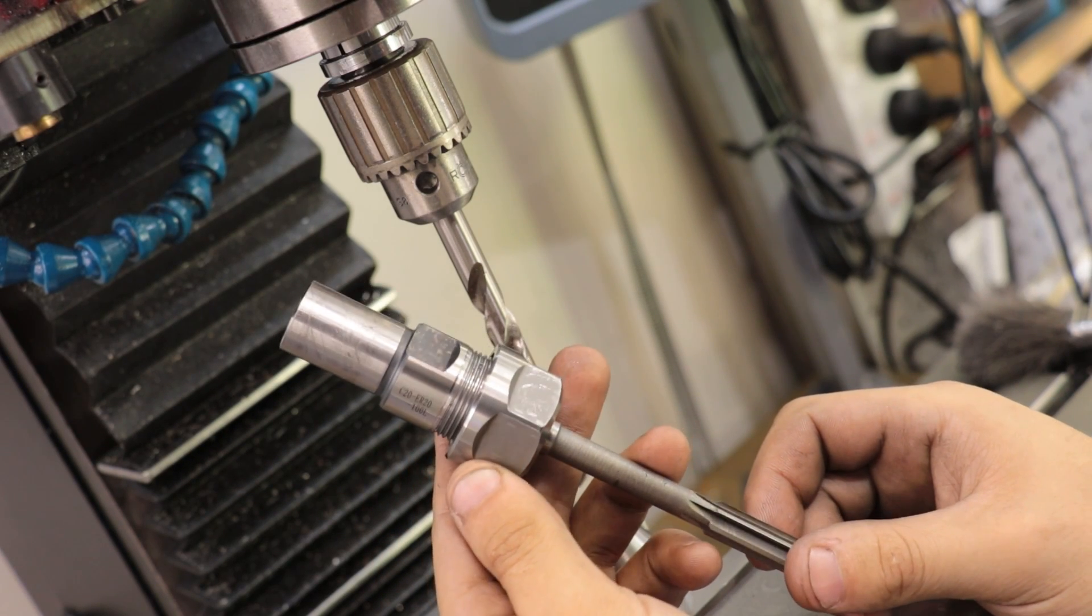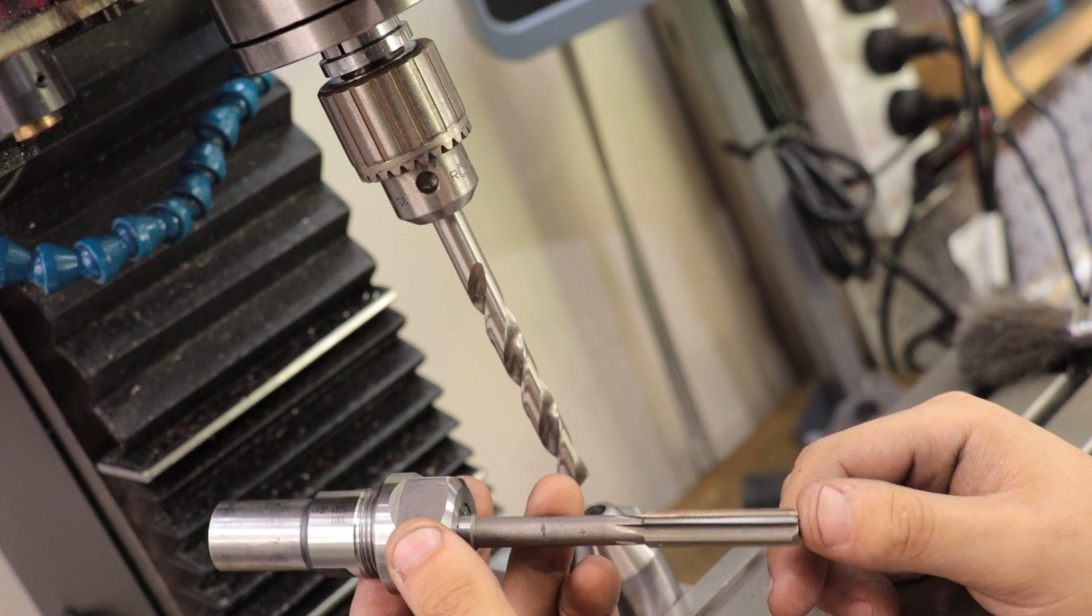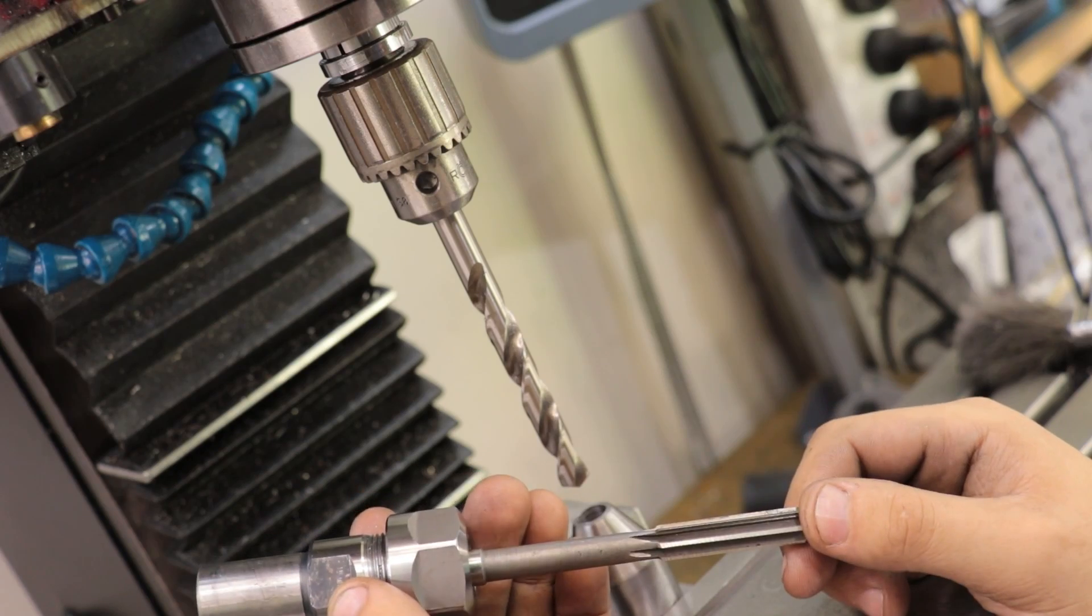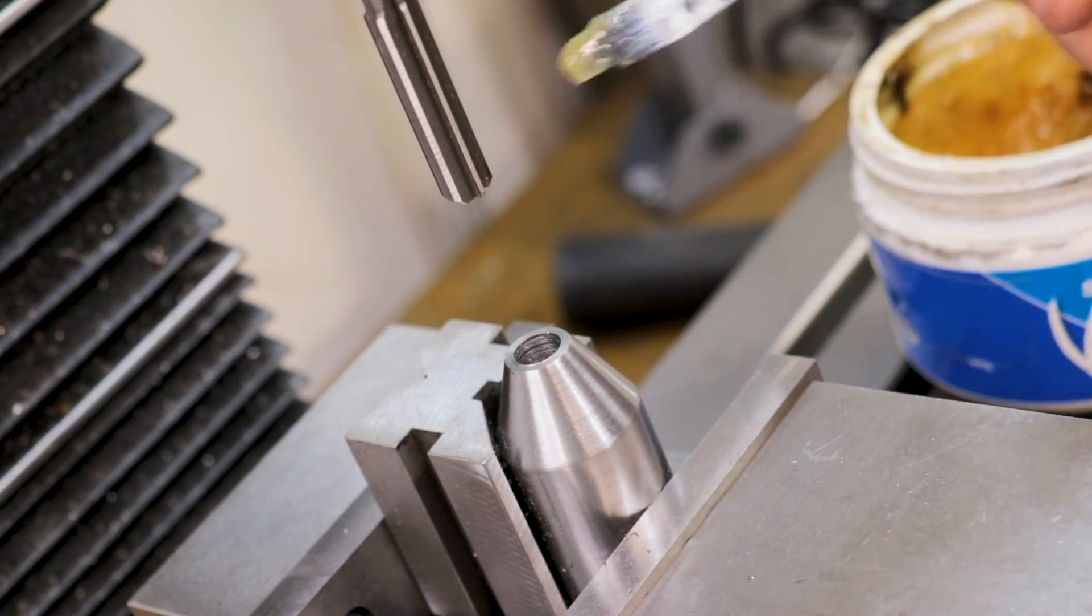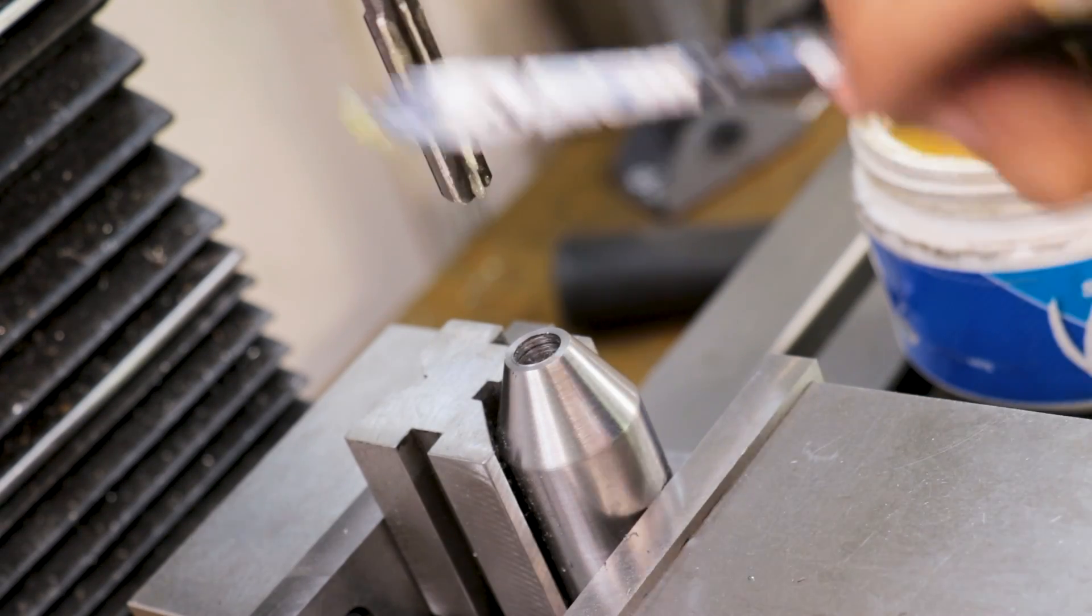Reaming is done at half the speed but double the feed of drilling and if I was to use my lathe, which is a fixed speed lathe, I'd probably burn up the cutter. And given that this reamer cost somewhere in the midst of 40 bucks, I'm not looking to replace it anytime soon.